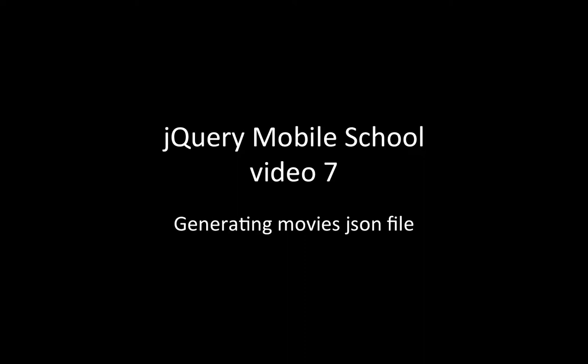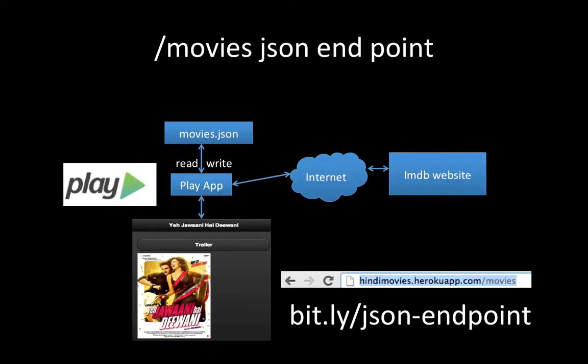Welcome to jQuery Mobile School. This is the seventh video in this series. In the first six videos, we learned how to create a frontend jQuery Mobile app that was powered by a JSON file which had the dynamic data. In this video, we're going to look at how we can create that dynamic JSON file so that our frontend gets new data as and when the backend gets new data.